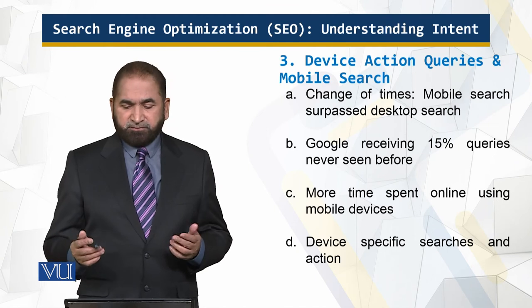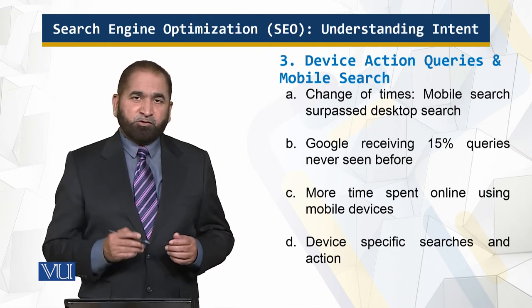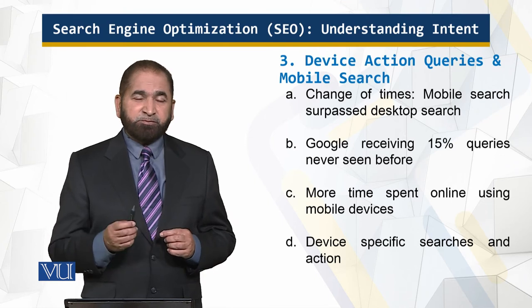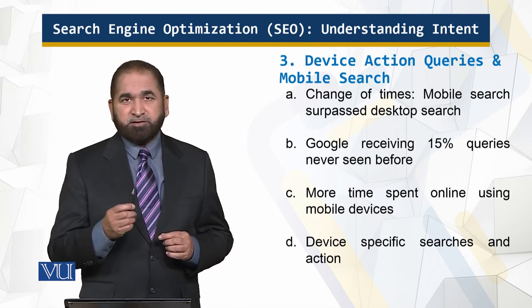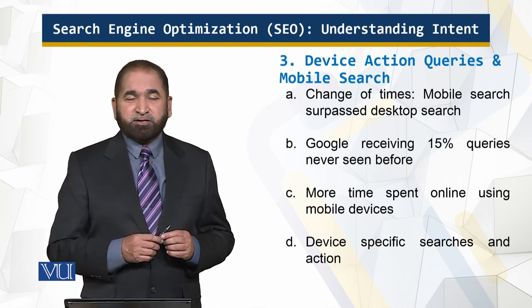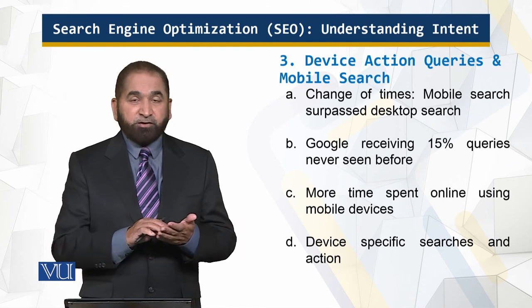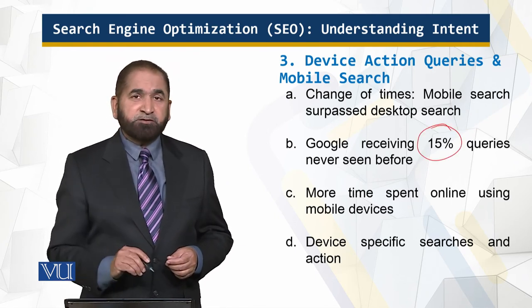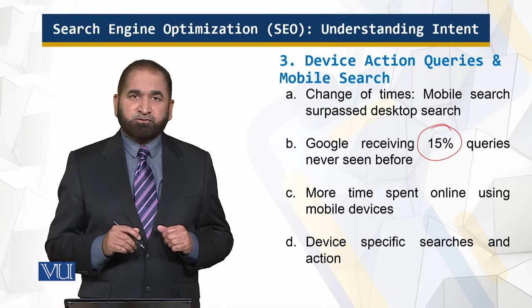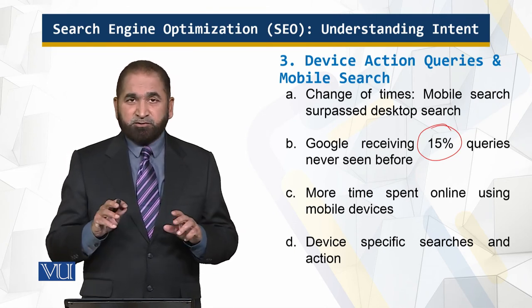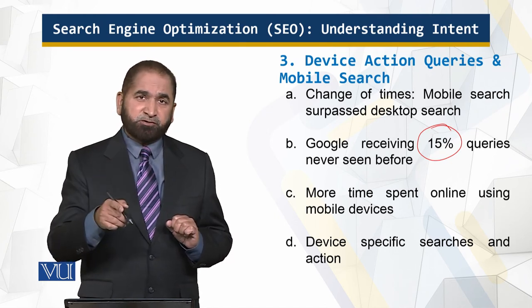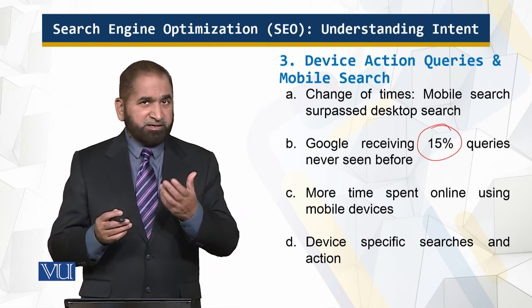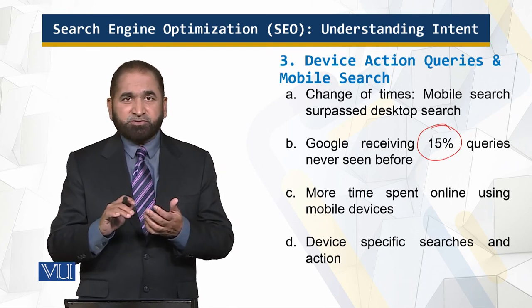What has changed over the years is that mobile search has surpassed desktop search. When mobile search surpasses desktop, it means searches can be locale-based, dependent upon current and latest events. A person moving around with a mobile phone can find something, observe something, and perform a search. As a result, Google is getting 15% queries that have never been seen before, because people are on the road, part of an event, and search on the spot.